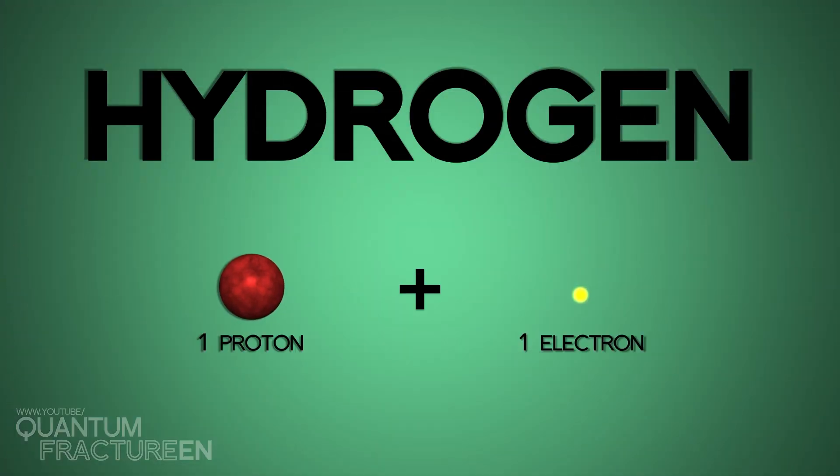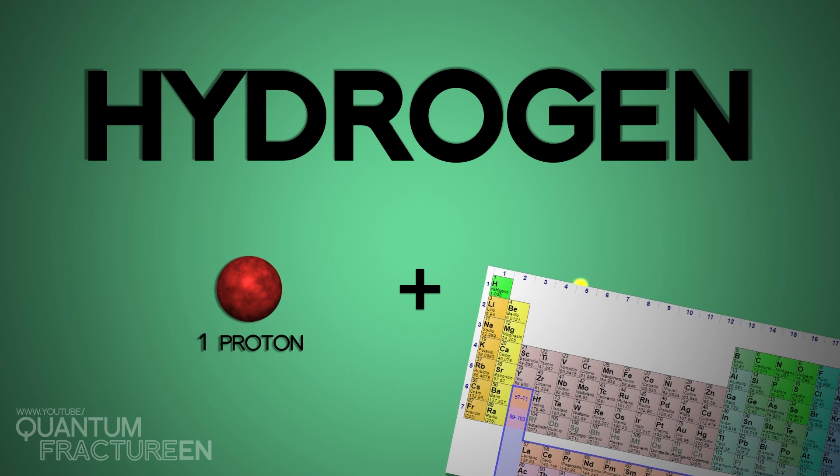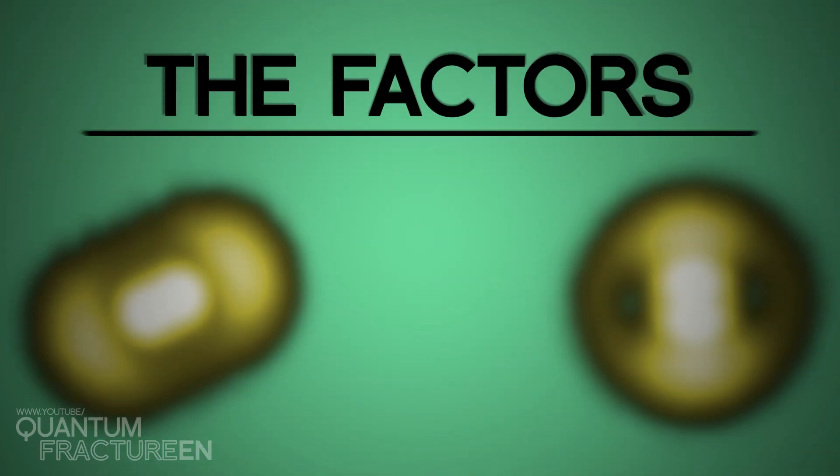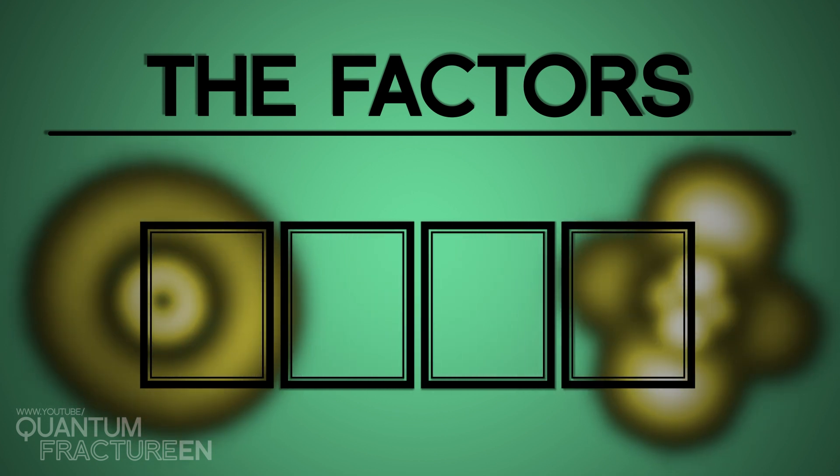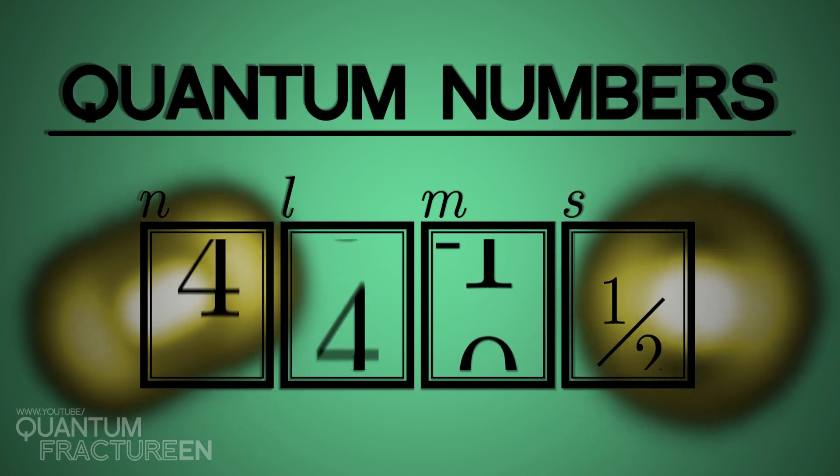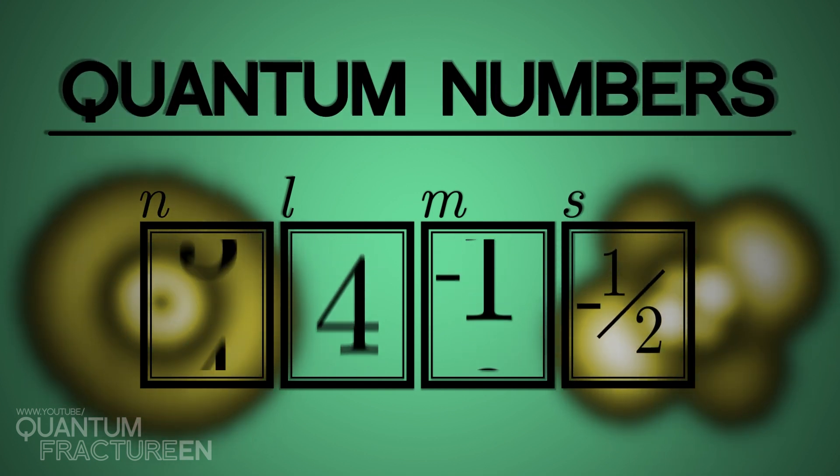We're going to explore those of the simplest atom of all, the hydrogen atom. Although what you'll see here can be applied to almost every element on the periodic table. The orbital shape basically depends on four factors. Four numbers that label each of the ways in which the electron can move inside the atom. Let me introduce you to quantum numbers, and hold onto your seats. It's going to be a wild ride.